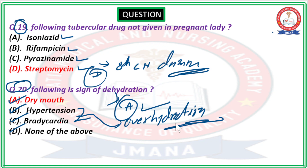These are the 20 questions we discussed today. Some changes may be possible in these questions as this is a memory-based paper. If you have additional questions or corrections, please mention them in the comment section so that future memory-based questions can be prepared and exact answers can be determined. These types of questions appear in one exam or another.